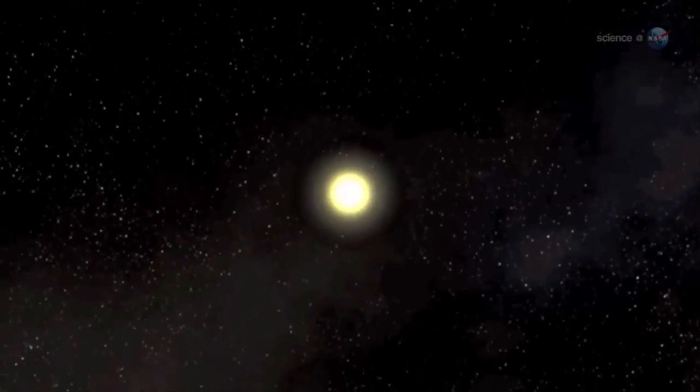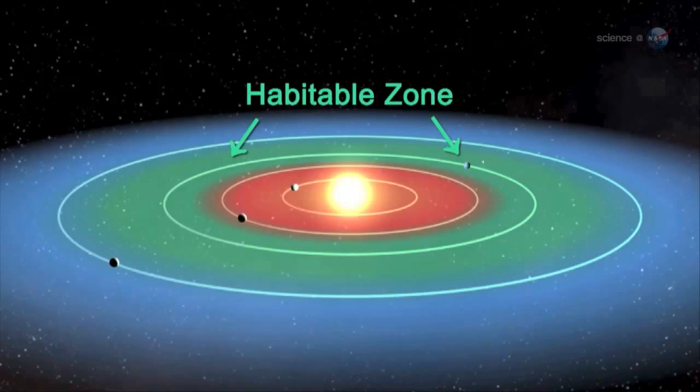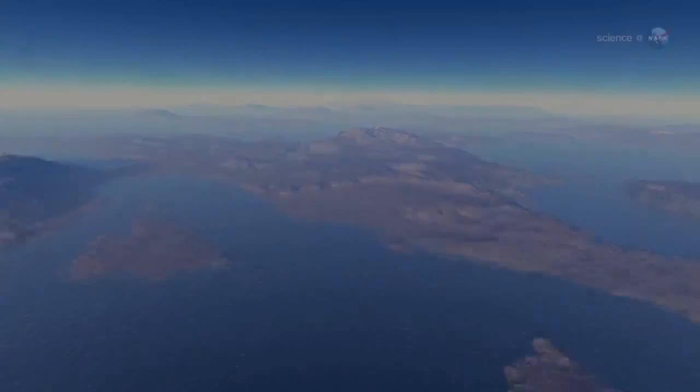Four of the new planets are less than two and a half times the size of Earth. Moreover, they orbit in their sun's habitable zone, where the surface temperature of the planets may be suitable for liquid water, a key ingredient for life as we know it.